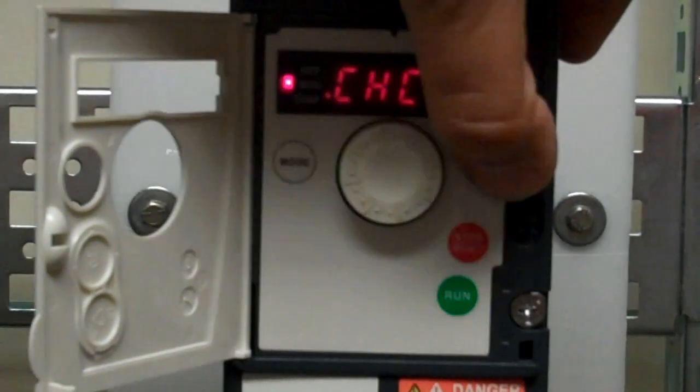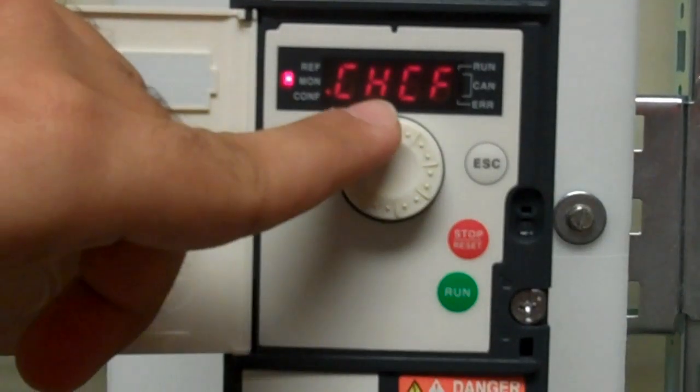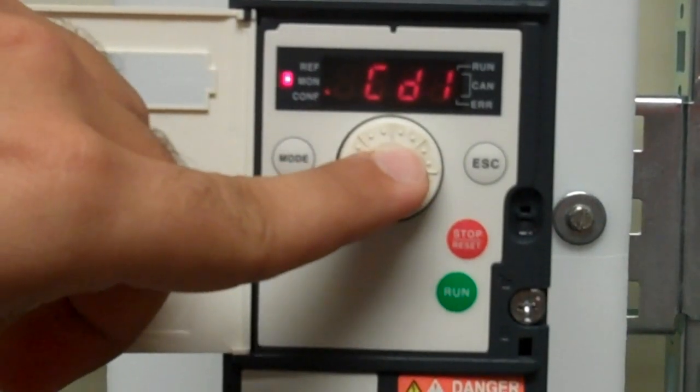Once it's on separate, escape back to the CHCF parameter and then scroll down to the last parameter, which is labeled as CD1.